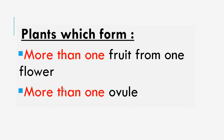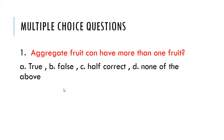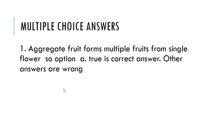Now let us ask a small question. First one: Aggregate fruit can have more than one fruit — is this true, false, half-correct, or none of the above? The answer is: aggregate fruits form multiple fruits from a single flower. Option A — True — is the correct answer. Other answers are wrong.